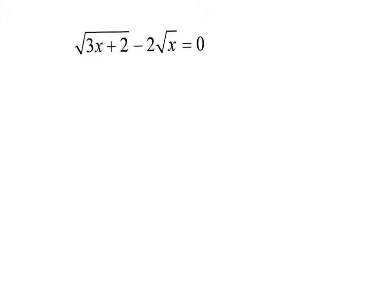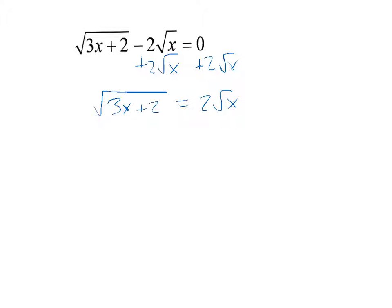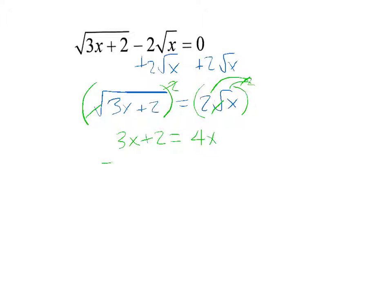Now what if you have more than one root? We work on it the same way — get one square root by itself. You want to get the most complicated one by itself first, so I move the 2 square roots of x to the other side by adding. Now I have the square root of 3x plus 2 equals 2 square roots of x. I square both sides, but make sure you're squaring everything — not just the root, but also the 2. So 3x plus 2 equals 2 squared times x, which is 4x. Subtracting 3x from both sides gives 2 equals x.